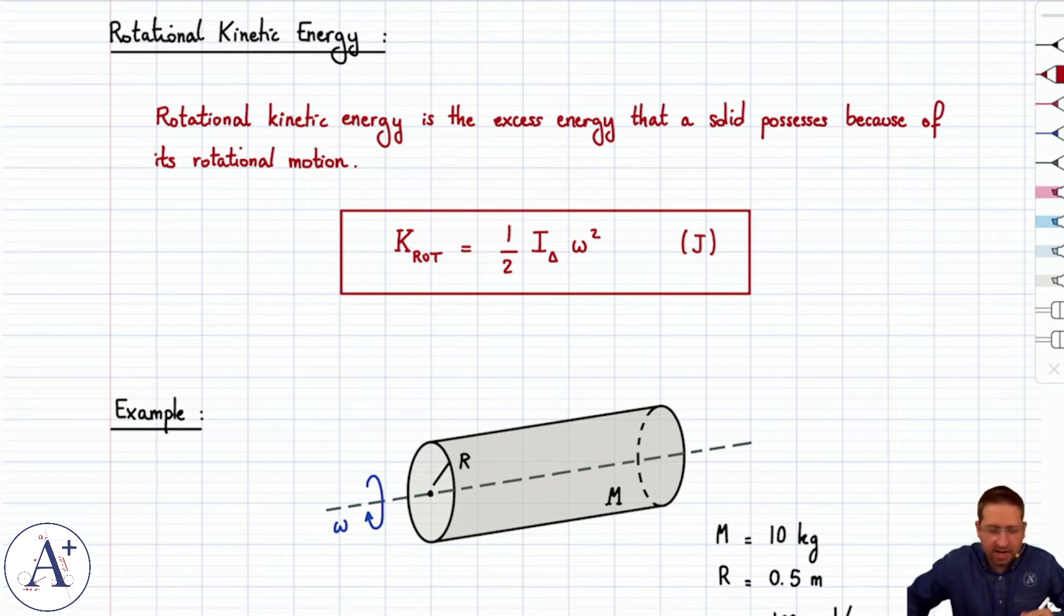If you take ½mv² and try to translate that over to the rotational world, well, ½ is a half, and then instead of mass you have moment of inertia, and then instead of v² you have omega squared, because omega describes rotational motion.